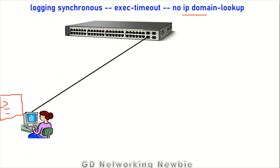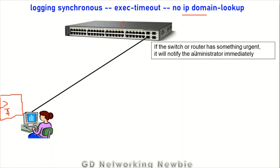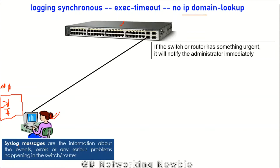We have a command line interface and we are giving commands to configure the switch. Meanwhile, if the switch or router has some errors or urgent messages, it will notify the administrator immediately by sending a message displayed on screen. These are known as syslog messages — information about events, errors, or any serious problem happening in the switch or router.